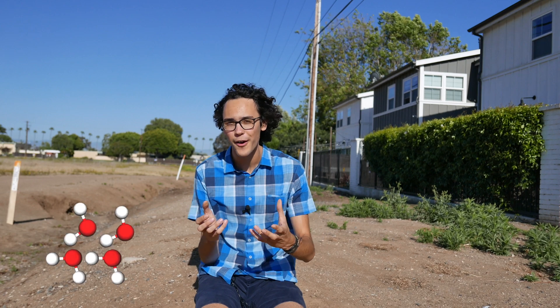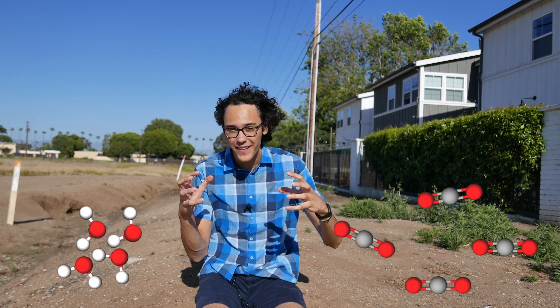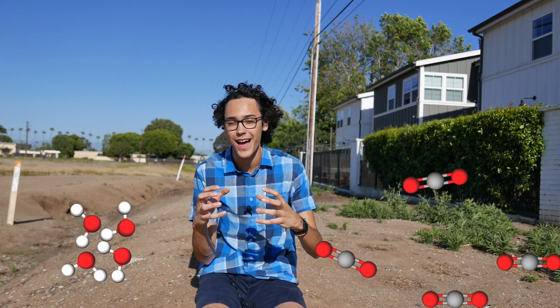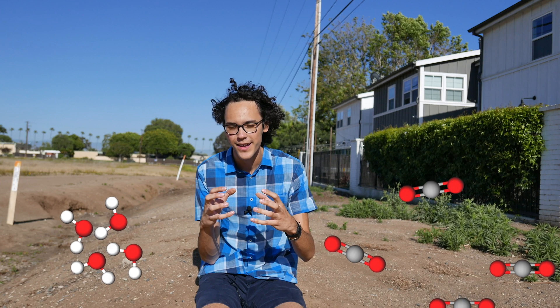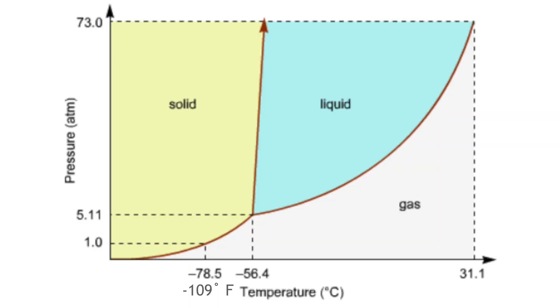Dry ice goes straight from being a solid to a gas, because unlike water, it doesn't have much of a force holding the individual molecules of carbon dioxide together. But that doesn't mean it can never be a liquid. This is called a phase diagram, and it shows whether carbon dioxide will be a solid, liquid, or gas at a given temperature and pressure.